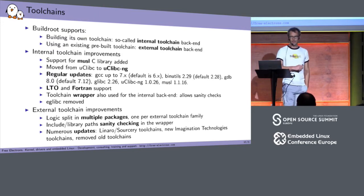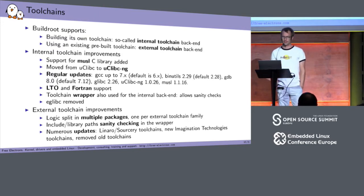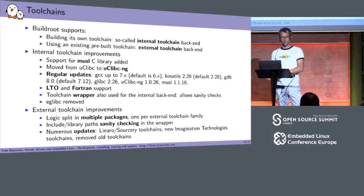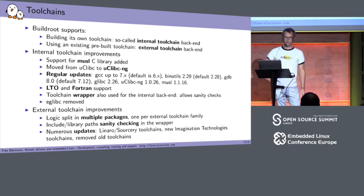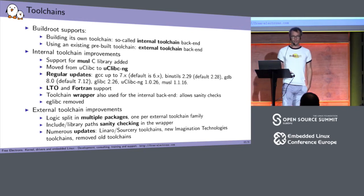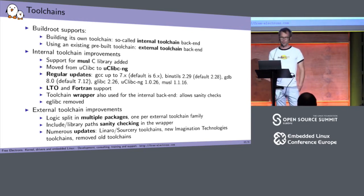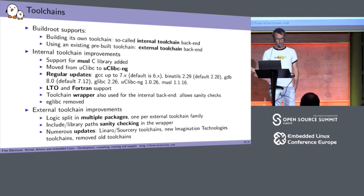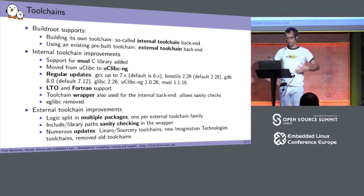On the external toolchain side, there were somewhat fewer improvements. One big internal change is how it's organized in Buildroot: the external toolchain support used to be one big package supporting all possible toolchains, but it was getting messy, so we split it into multiple packages — one per external toolchain family: one for Linaro ARM, one for Linaro ARM64, one for CodeSourcery toolchains, and so on. We improved the wrapper to do sanity checking of header and library paths, updated toolchains to use more recent Linaro and CodeSourcery versions, added toolchains from Imagination Technologies and Synopsys for the ARC architecture, and removed old unmaintained toolchains.